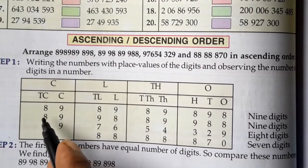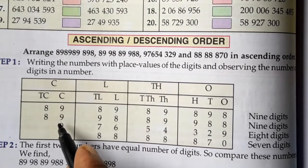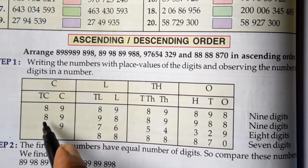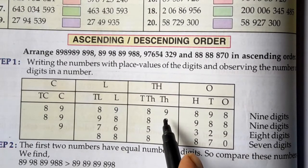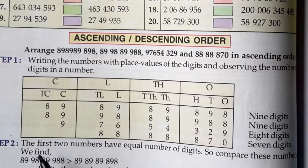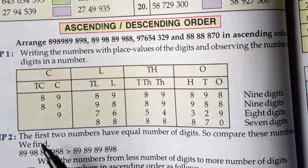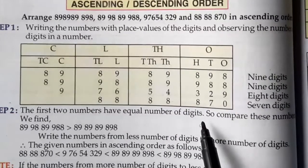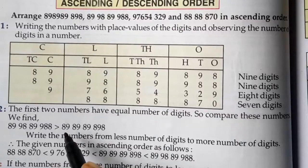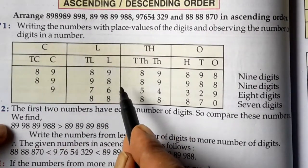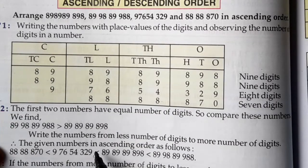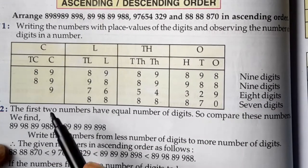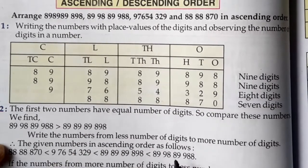In Step 2, since the first two numbers have equal numbers of digits, we compare them. The second number is found to be the larger number. So the ascending order is: last number first, then third number, then first number, then second number.